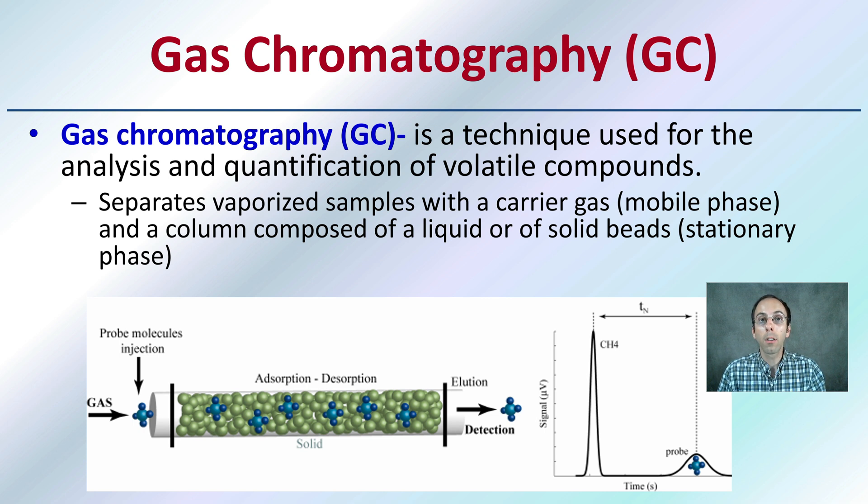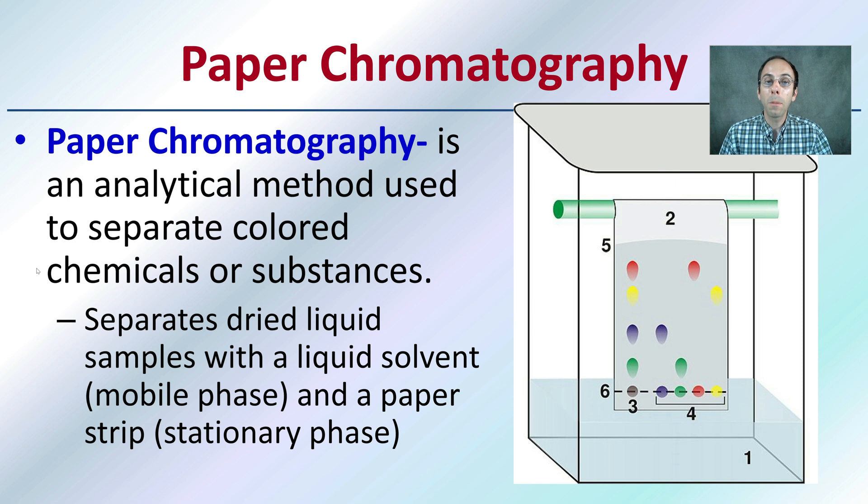We're looking at identifying certain volatile compounds—paints, gasoline, for example. Gas chromatography can be used for that in forensic science. Paper chromatography is something you might be familiar with, something you may have even done.